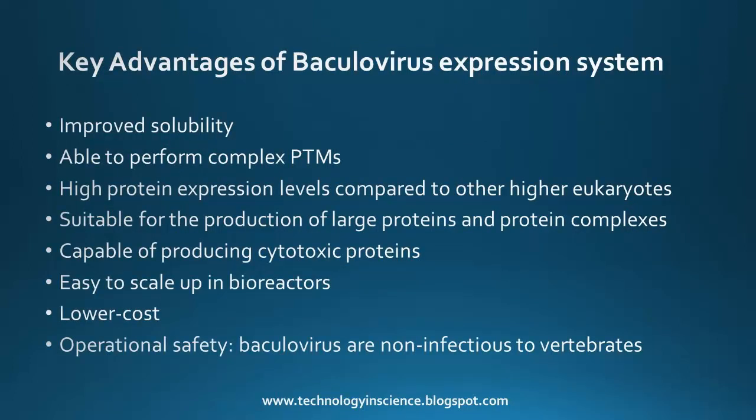Let's see some of the key advantages of using baculovirus. The advantages include improved solubility, achieving complex post-translational modifications, producing high levels of protein expression compared to other higher eukaryotes, suitability for production of large proteins and protein complexes, capability of producing cytotoxic proteins, easy scale-up in bioreactors, relatively low cost compared to other eukaryotic systems, and importantly, operational safety.